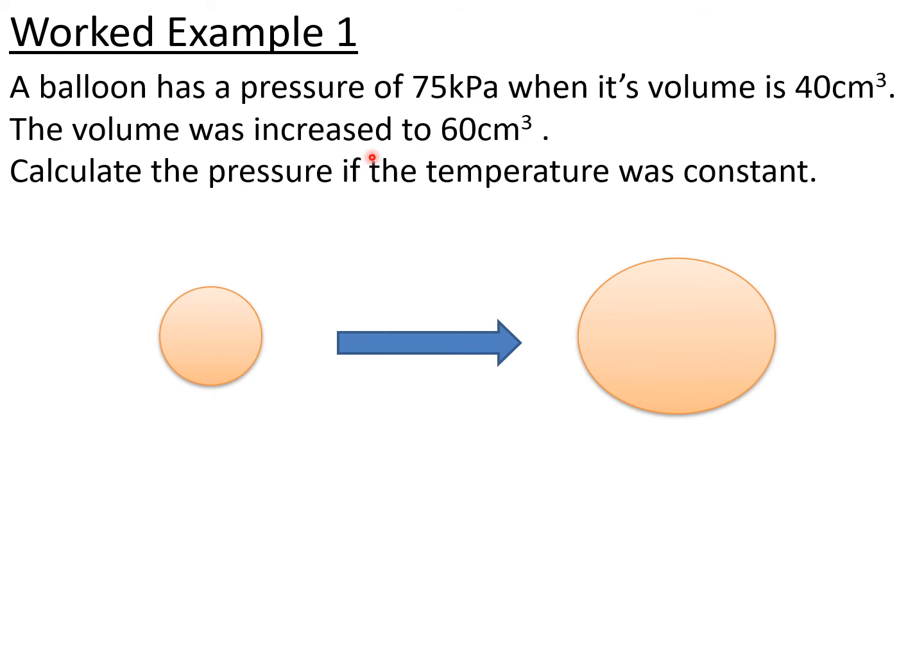So let's get straight into a worked example. A balloon has a pressure of 75 kilopascal when its volume is 40 cm³. The volume was increased to 60 cm³. Calculate the pressure if the temperature was constant. So again, if you're feeling confident, because you should by now know about the KFC technique, go and try this one yourselves. I will take you through the answers in the next slide.